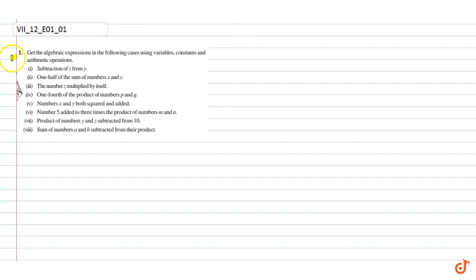In this video we are going to solve question number one. In this question we have to get the algebraic expression in the following cases using variables, constants and arithmetic operations. First is subtraction of z from y.